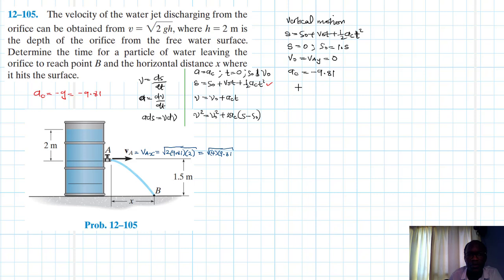Right, with this information we can simply say we can simply go ahead and plug in all values. We have zero equal to s naught is 1.5, then we have minus half times 9.81 times t squared.